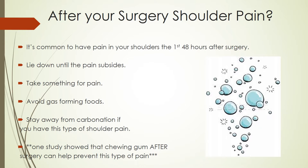It's common to have pain in your shoulders for the first 48 hours after surgery. If you have this type of pain, lie down until it subsides, take something for pain, avoid gas-forming foods, and stay away from carbonation. One study has shown that chewing gum after surgery can help prevent this type of shoulder pain.